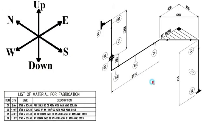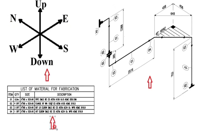This is the pipe isometric drawing. This sketch is showing the directions. This is the list of material for fabrication. Let's learn the details used in the pipe drawing.